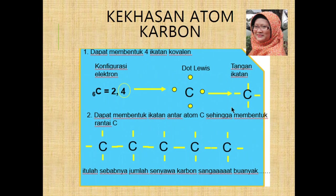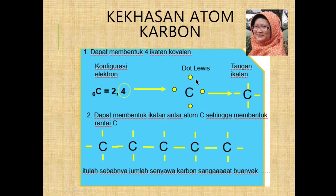Berikutnya kita bicara mengenai kekhasan atom karbon. Yang pertama, dapat membentuk 4 ikatan kovalen. Karbon dengan nomor atom 6, konfigurasi elektronnya adalah 2, 4. Adanya 4 elektron terluar — jika ditulis dengan rumus Lewis ada 4 titik elektron — menyebabkan atom karbon siap berikatan dengan atom lain dari kanan, kiri, atas, dan bawah secara bersamaan.